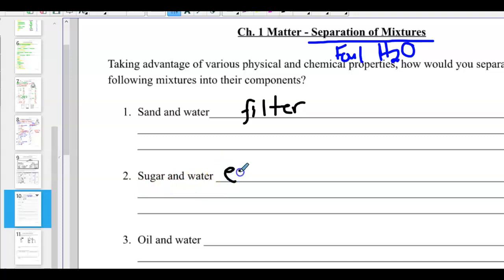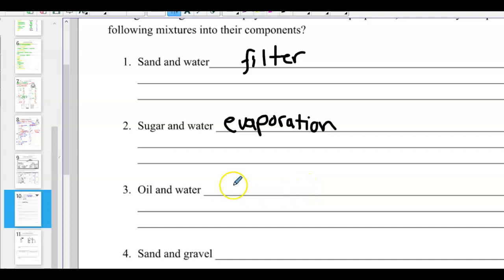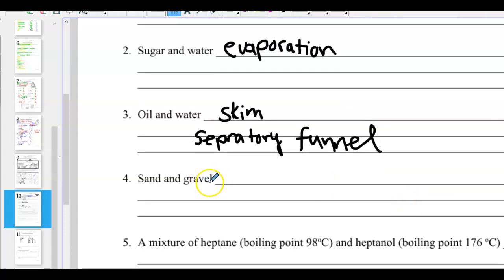Sugar and water. We need to use evaporation. We could heat it up on the stove and get the sugar back a lot faster. Or we could just let it sit in a jar for a couple weeks and make rock candy. Oil and water. How about that one? Well, a couple options. We could skim it off the top like they do for oil spills out in the ocean. Or we could use a separatory funnel. That's what we used in the foul water lab. That was that little teardrop shaped glass funnel.